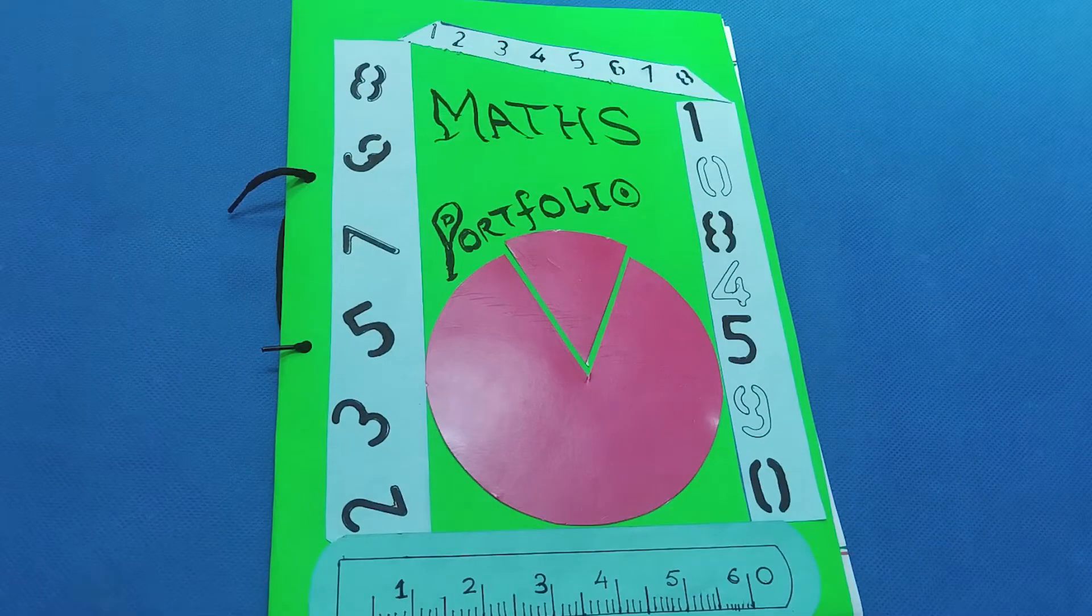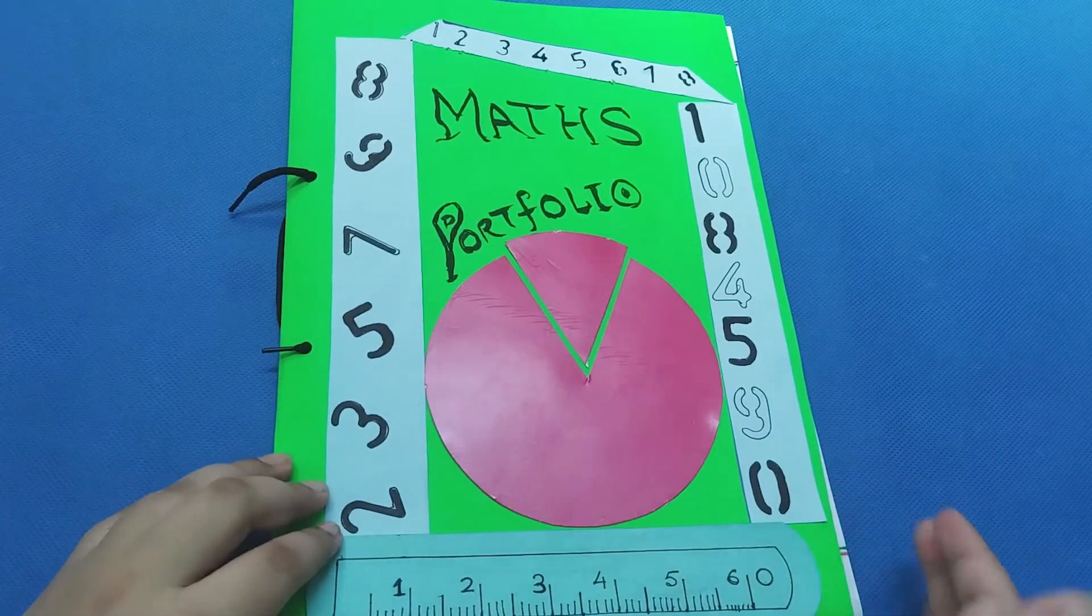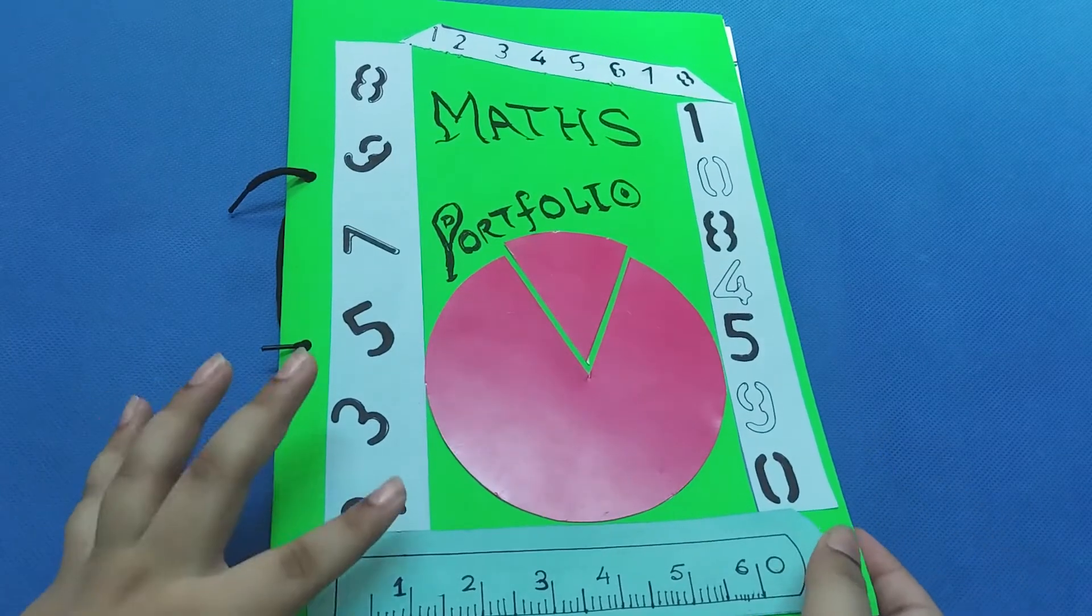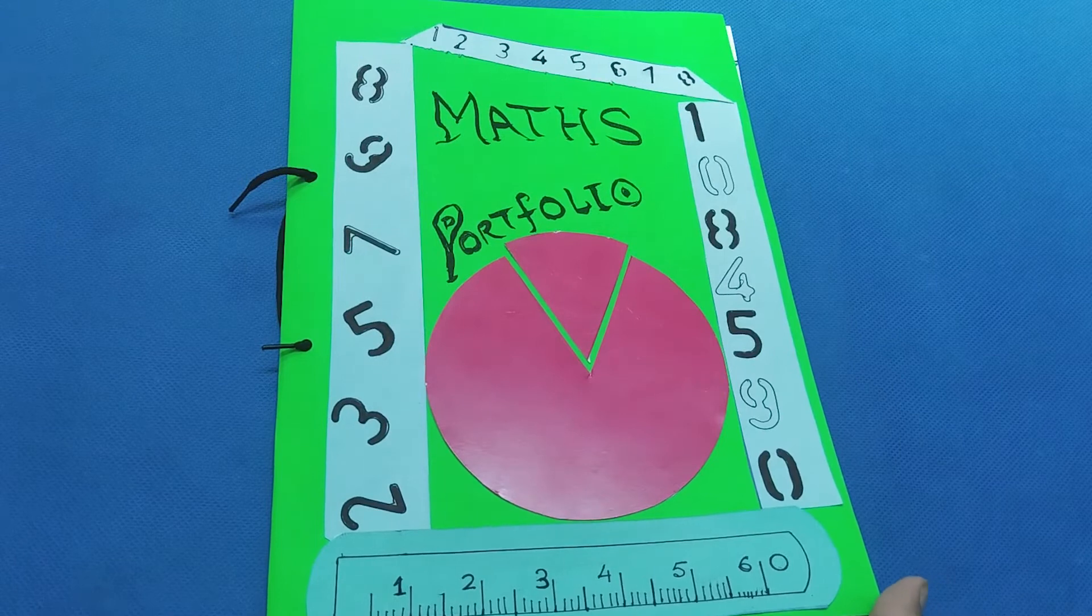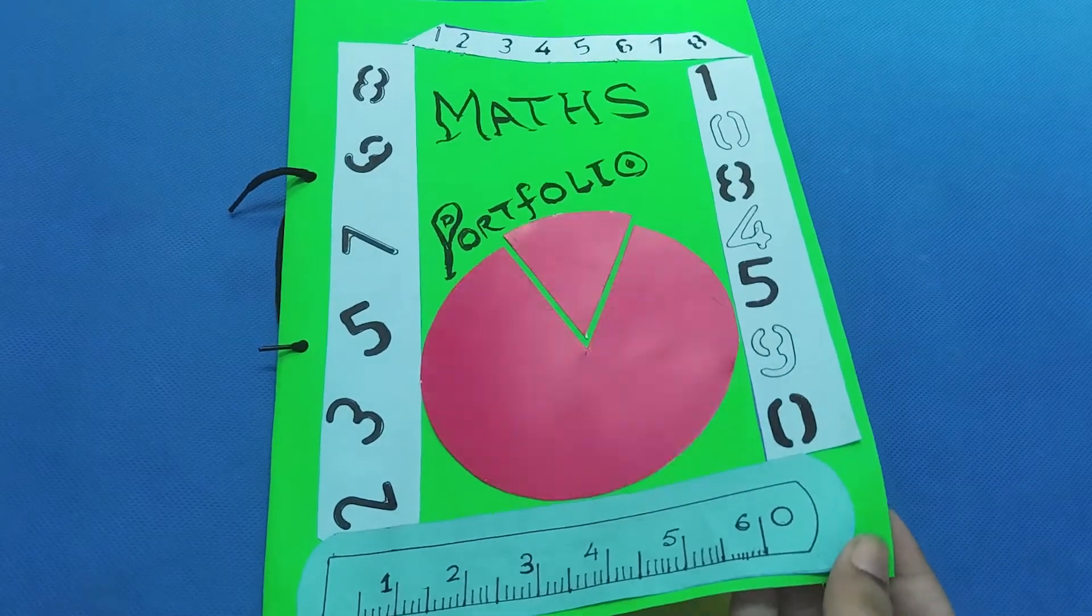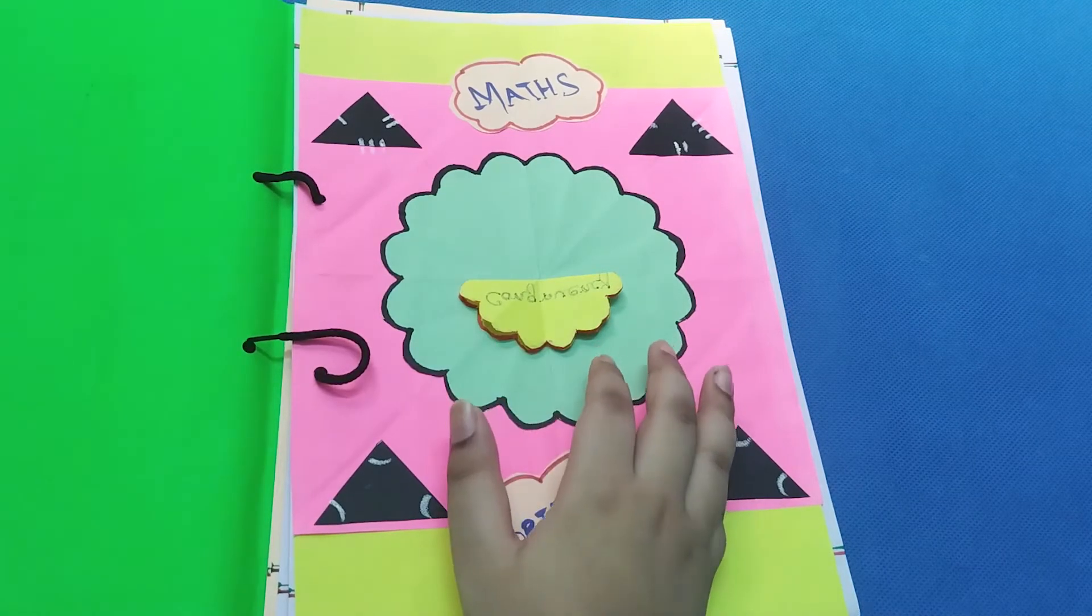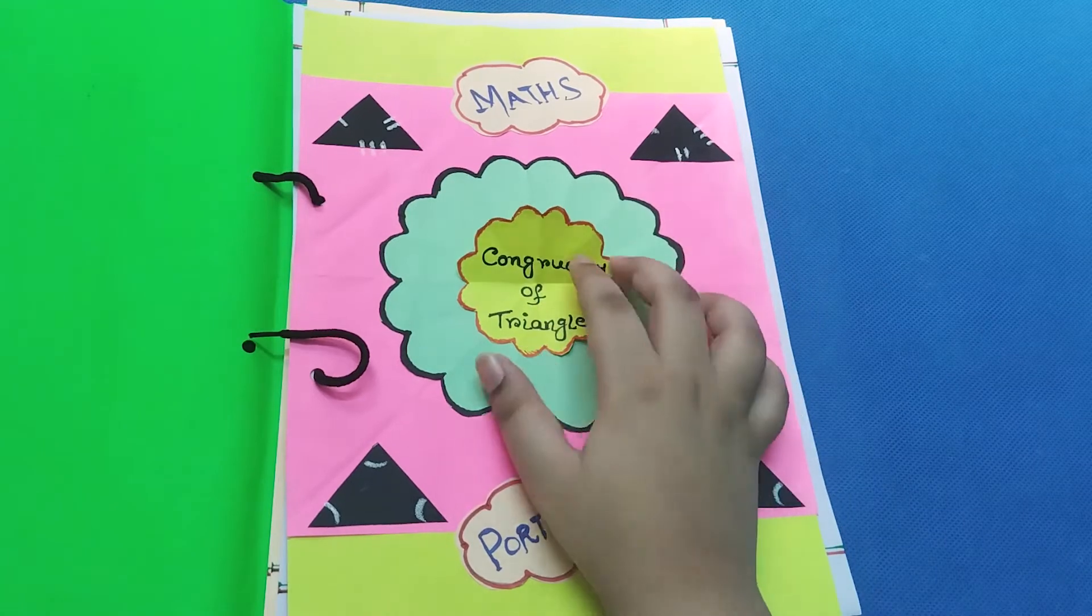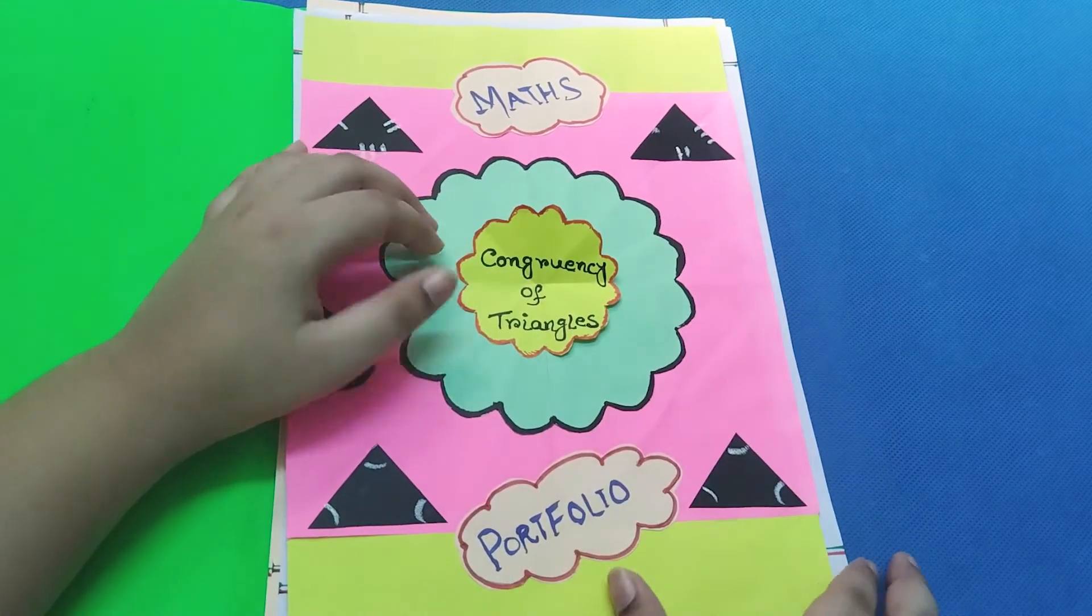So let's begin. This is the first cover of my math portfolio. I've written some things, used craft paper and decorated it. I'm going to show you step by step how to do this. Here on the first page I've written 'Math' and the subject: congruency of triangles.